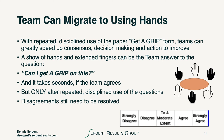Once a team has gotten highly skilled at using the form, it's very possible to migrate to using your hands. It's simple — once people have gotten the discipline down using the form — to be able to call, 'Can I get a grip on this?' and ask for a show of hands.